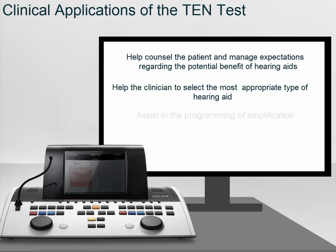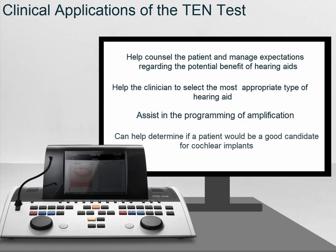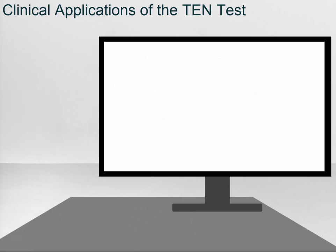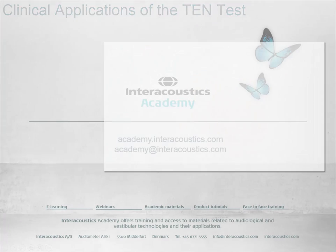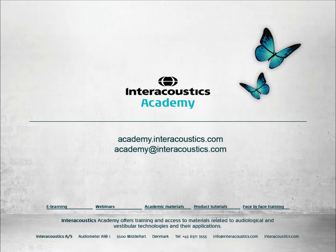Identifying the dead region can also guide the clinician in how to program this particular amplification. Lastly, identifying dead regions is particularly useful in those which are cochlear implant candidates, as identifying the dead region can add weight to the case for cochlear implants. This concludes this quick guide video which looked at how to interpret the TEN test.